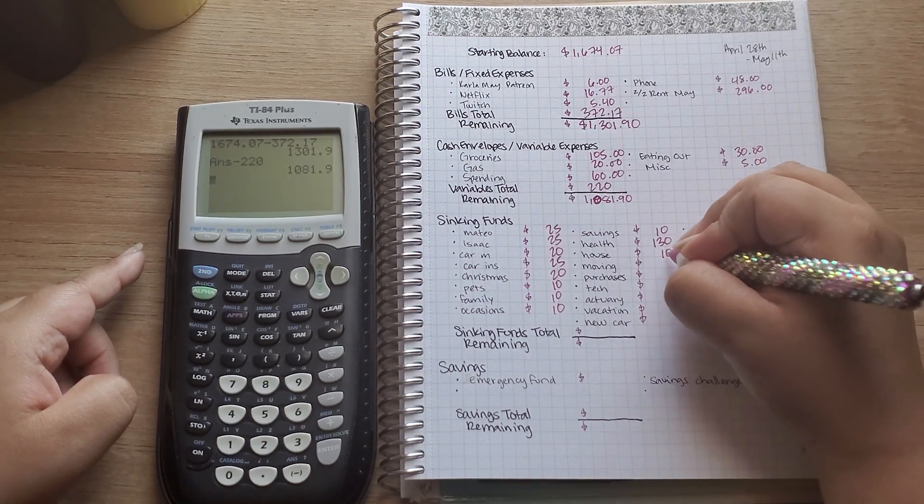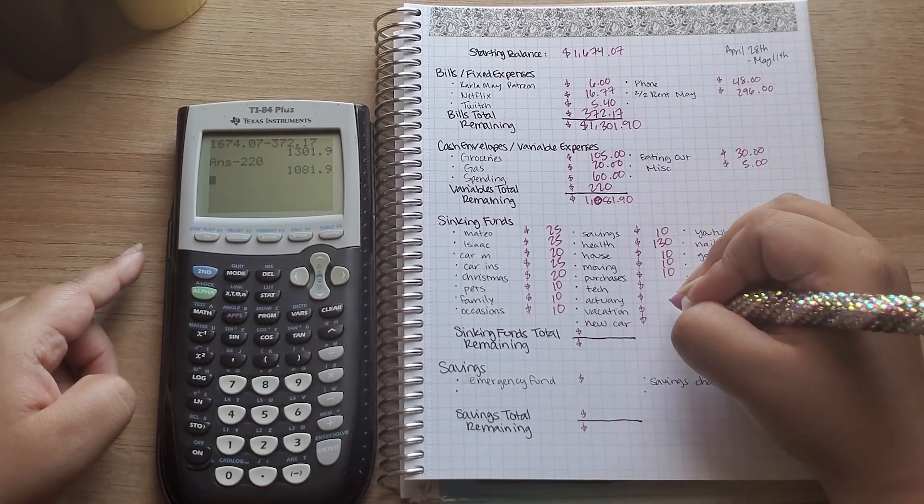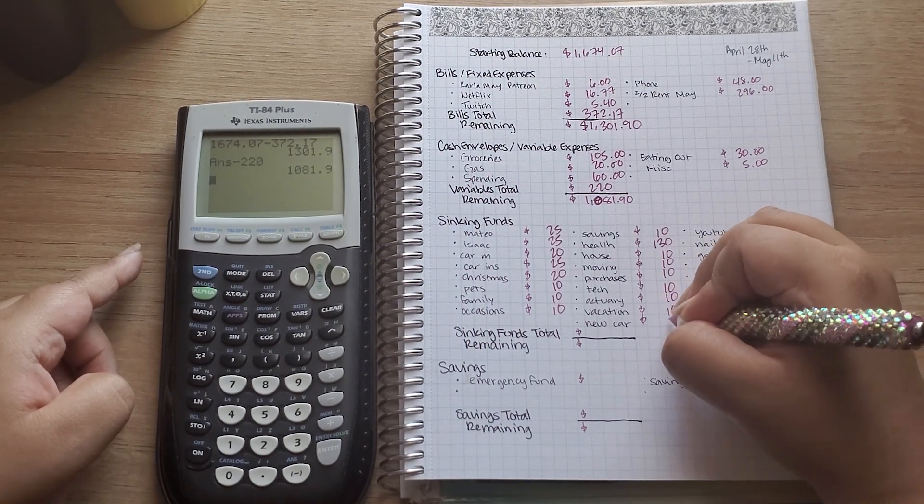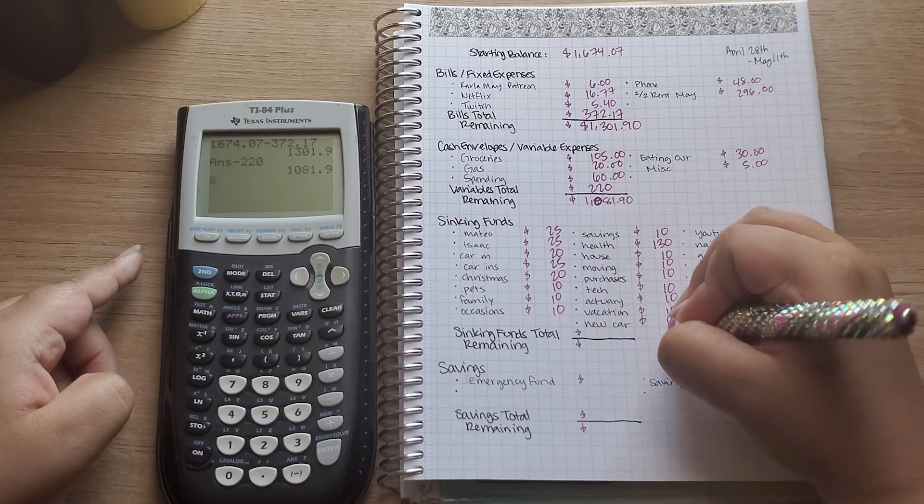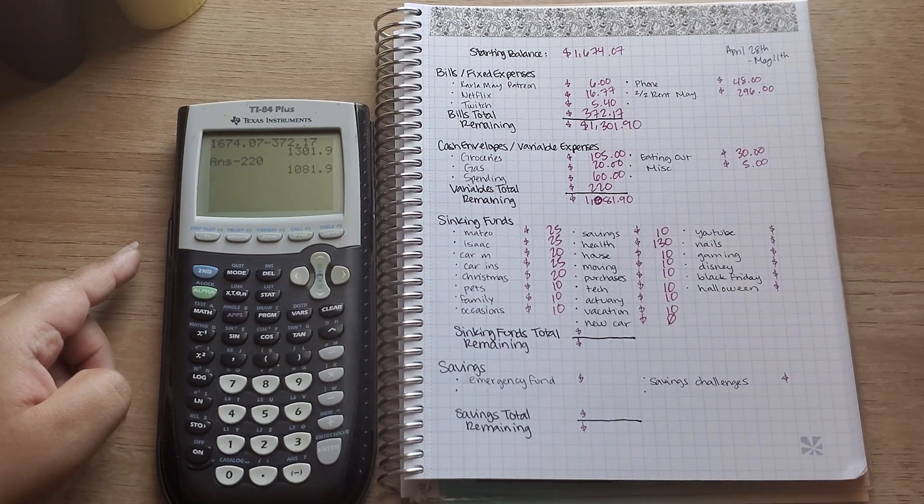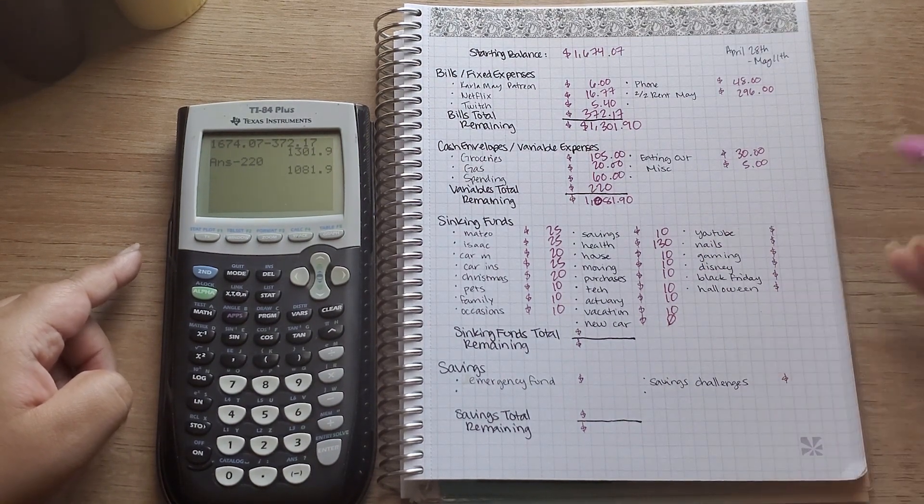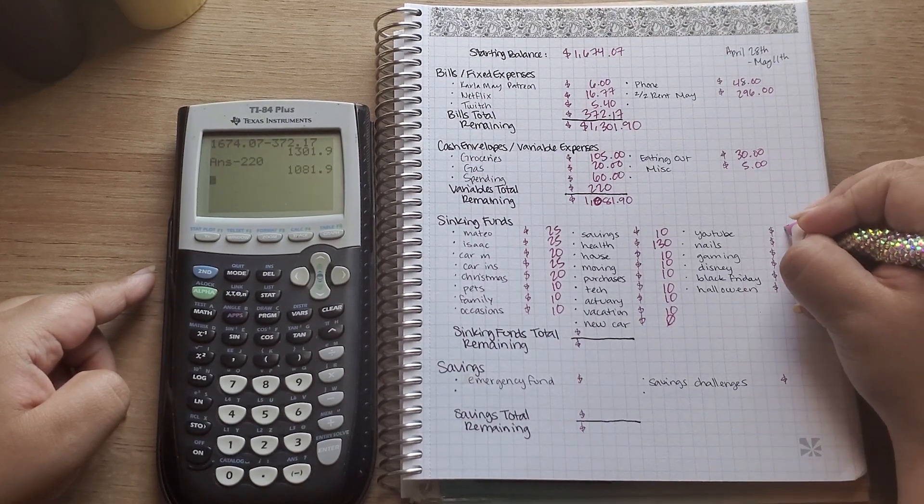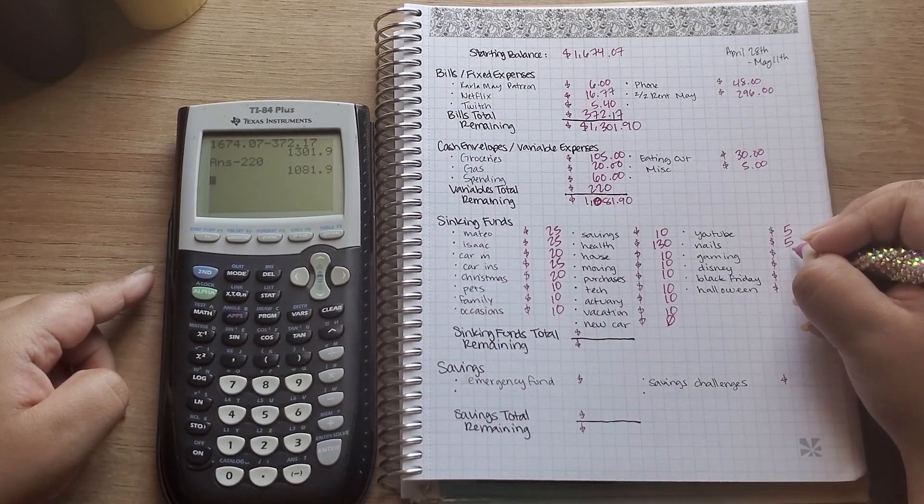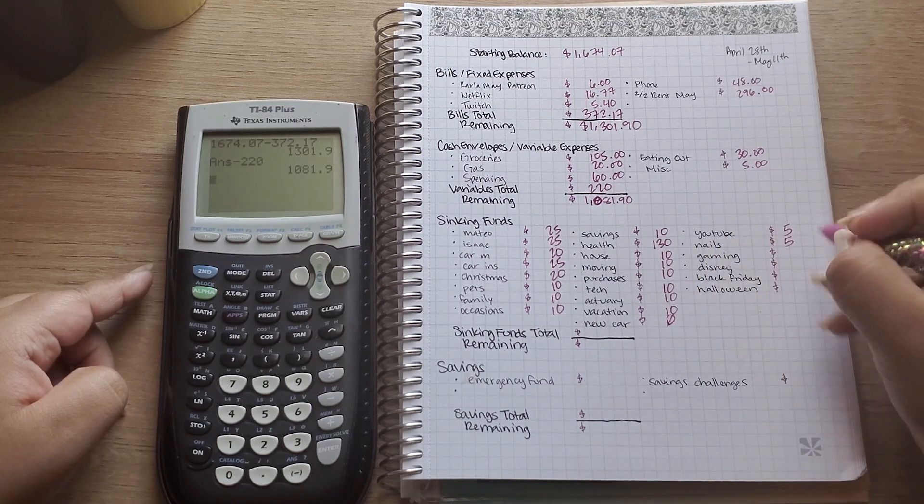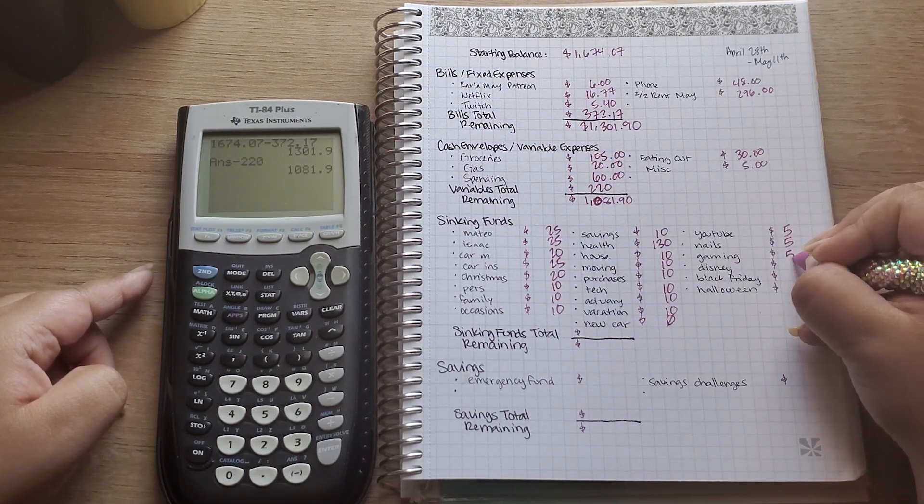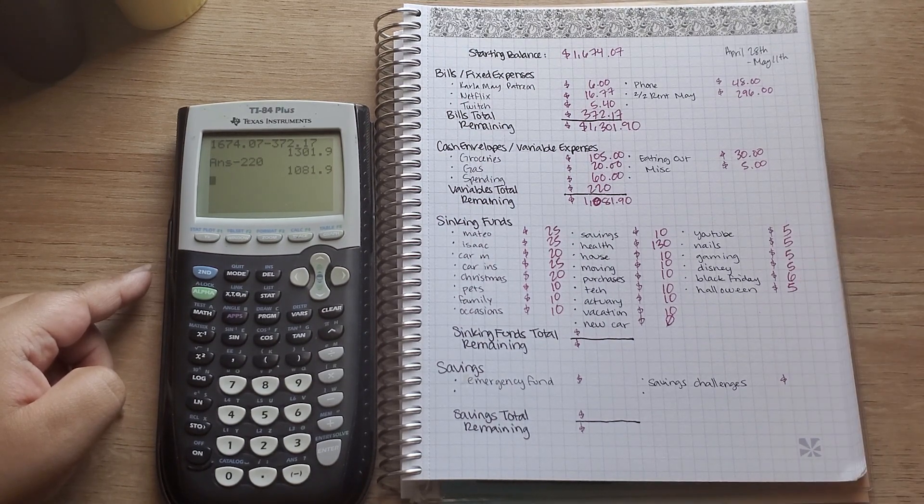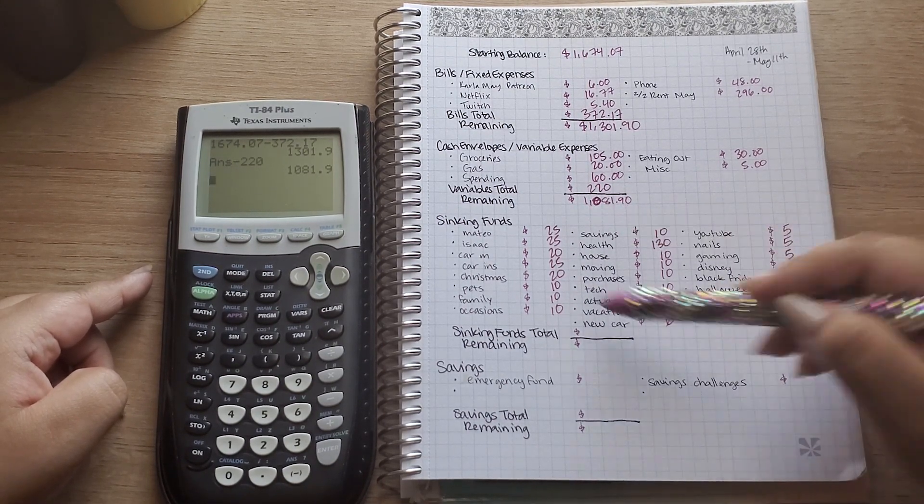House is going to get $10, moving $10, purchases $10, tech $10, vacation $10, and then new car is not getting anything. And then on to my YouTube or my fun stuff. So YouTube is going to get $5, nails $5. I completely depleted that envelope so now it's going to get built back up. Gaming $5, Disney $5, Black Friday $6, and then Halloween $5.